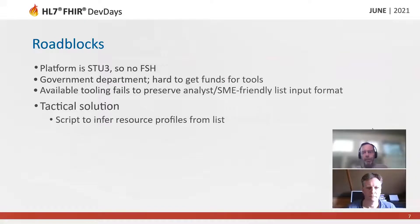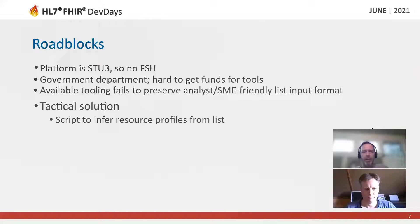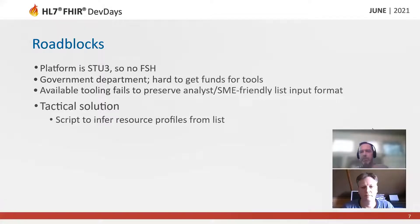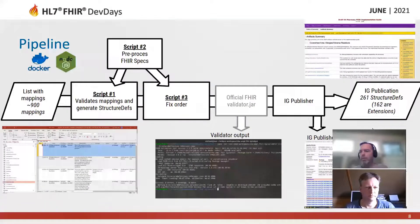There are a couple of issues we face. First, the platform was STU3, so we can't use the latest FHIR; there's a government department constraint and it's hard to get bureaucratic things done quickly or at all. But the basic concept we came up with was that we can take this table and come up with a script that will infer our resource profiles from that list. And now I'll turn it over to Michael to tell you a little bit more about what that looks like.